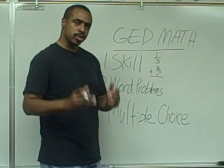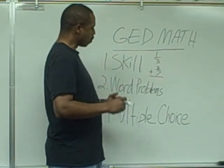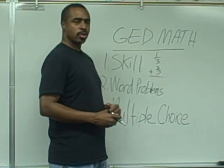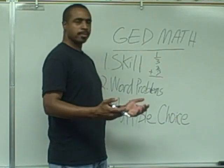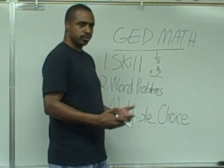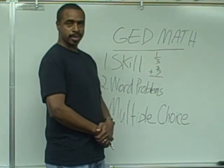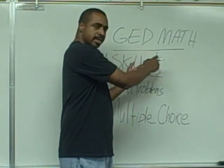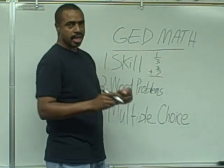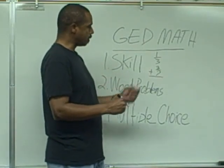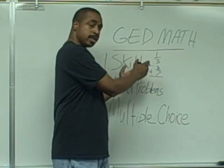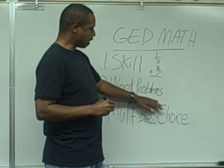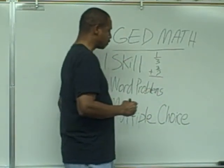The second piece of the puzzle is word problems. For example: Peter added 1/3 cup of sugar and 3/7 cup of flour to his recipe. What was the total amount of dry goods that he added to his recipe? You need to be able to interpret that word problem back down to the skill — because they ask for the total amount, that means we're going to have to add.